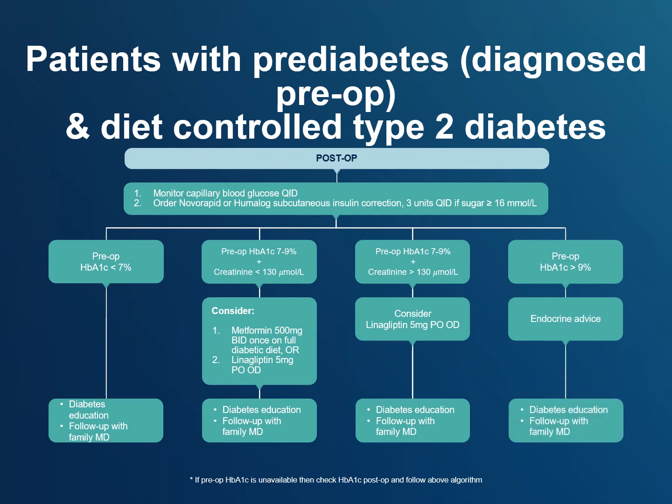A hemoglobin A1c over 9% indicates severe undiagnosed pre-existing hyperglycemia. Contact endocrinology for advice. In all cases, make sure the patient receives appropriate diabetes education and follow-up with their family physician after discharge from the hospital.